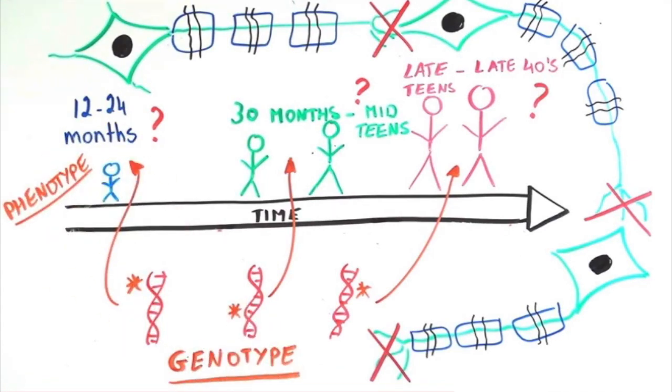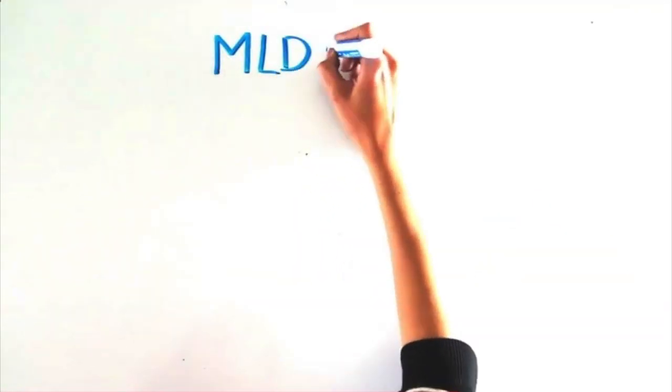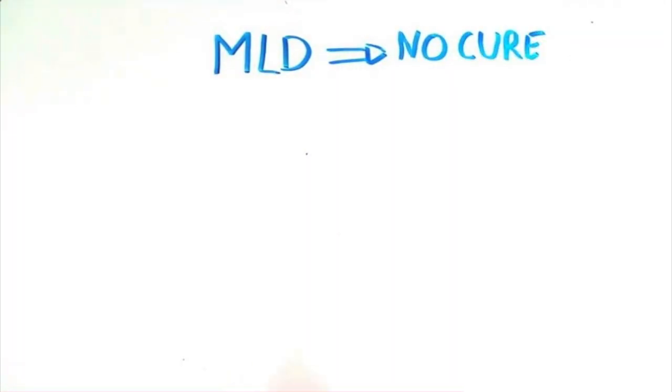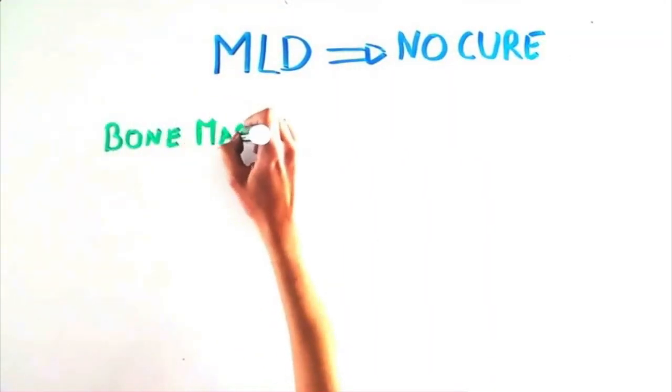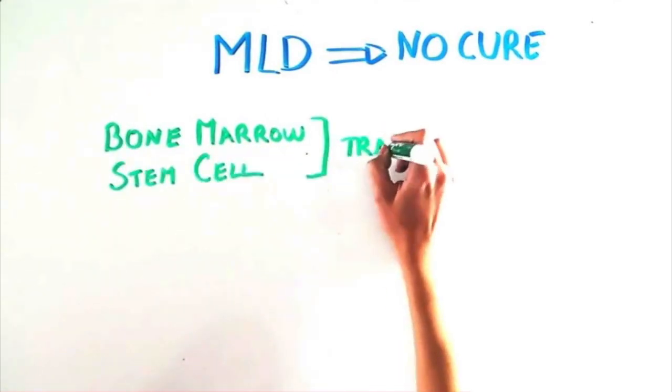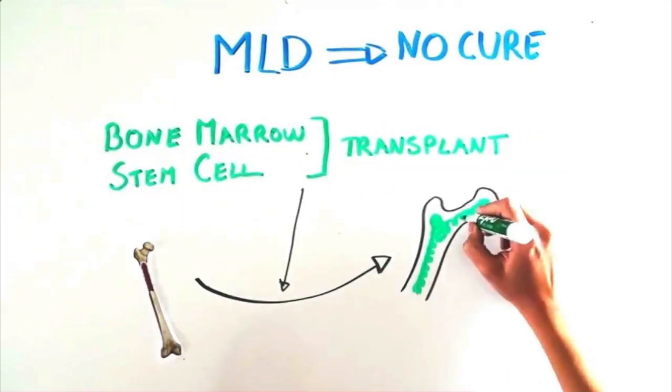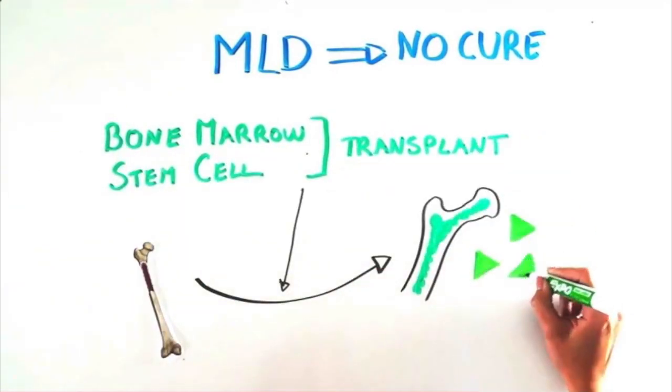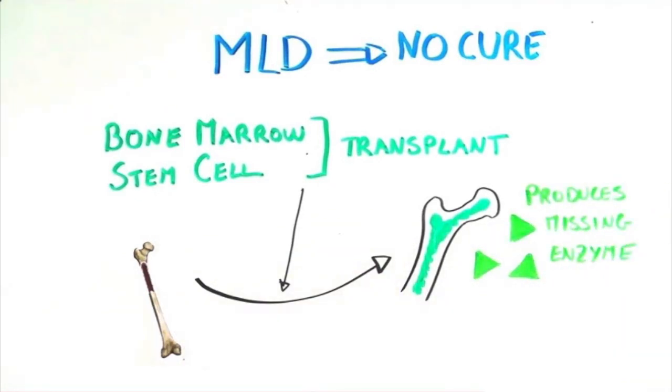What we do know is that MLD is an extremely severe disease for which there is currently no cure. Patients with MLD sometimes resort to bone marrow or stem cell transplant to replace the damaged marrow with healthy marrow that can produce the missing enzyme. Transplant for metabolic disease has improved over the years, but is still extremely risky.